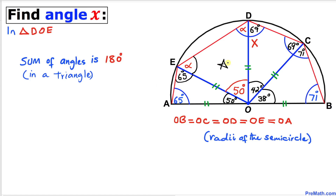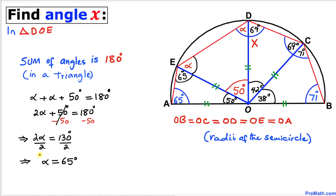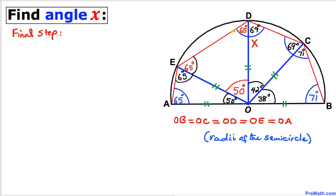Returning to triangle DOE, the sum of all three angles equals 180 degrees: alpha plus alpha plus 50 degrees equals 180 degrees. Solving for alpha gives 65 degrees. So both base angles of triangle DOE are 65 degrees. For our final step, angle x equals 65 degrees plus 69 degrees, which gives us x equals 134 degrees.